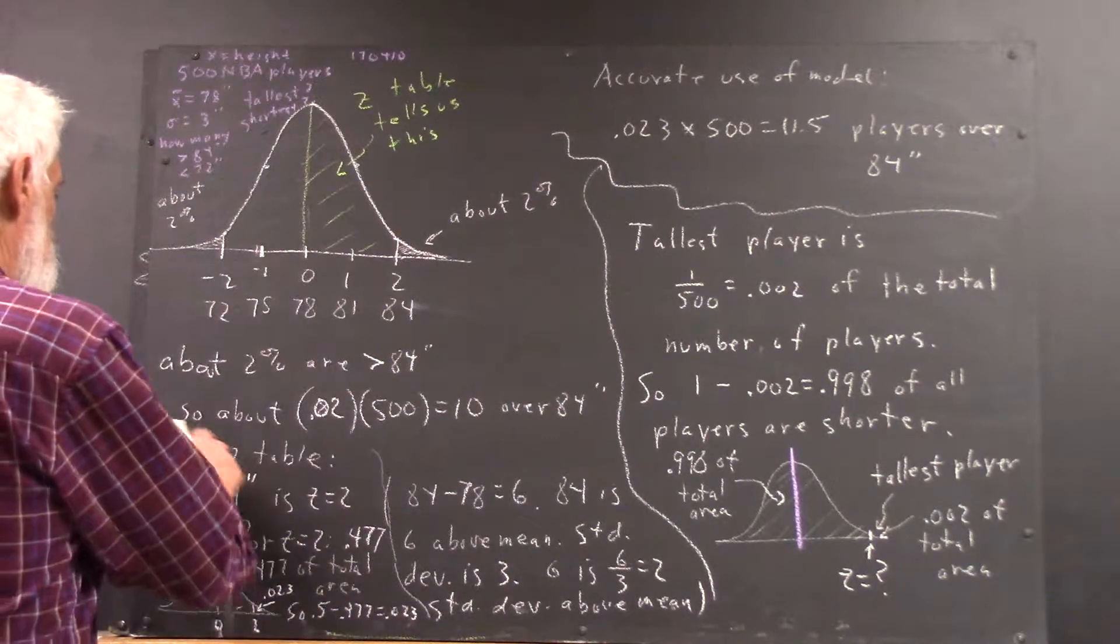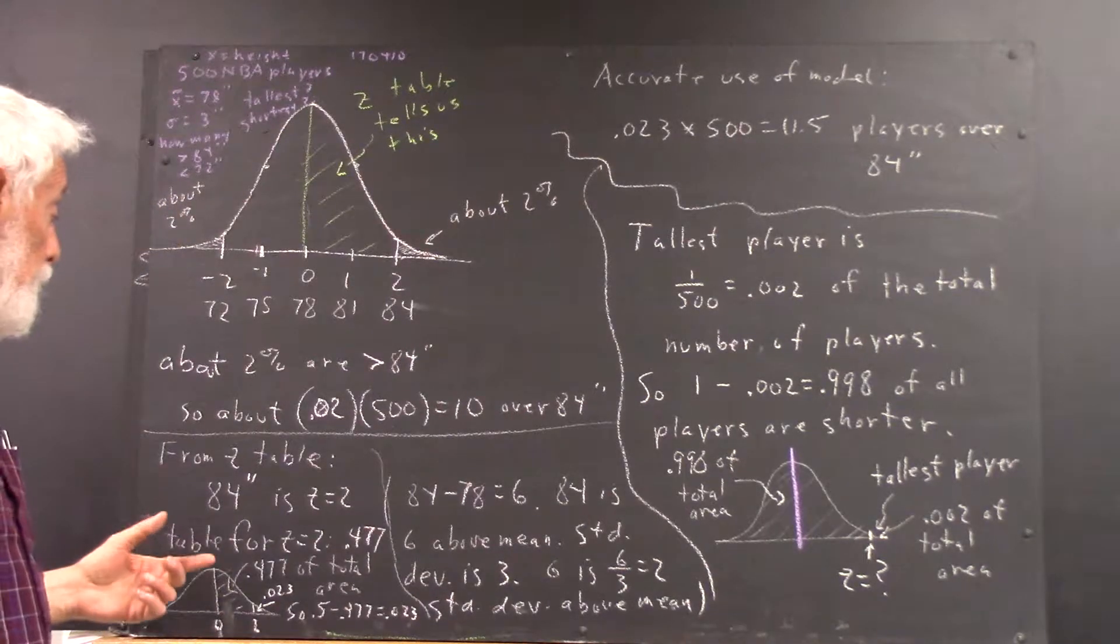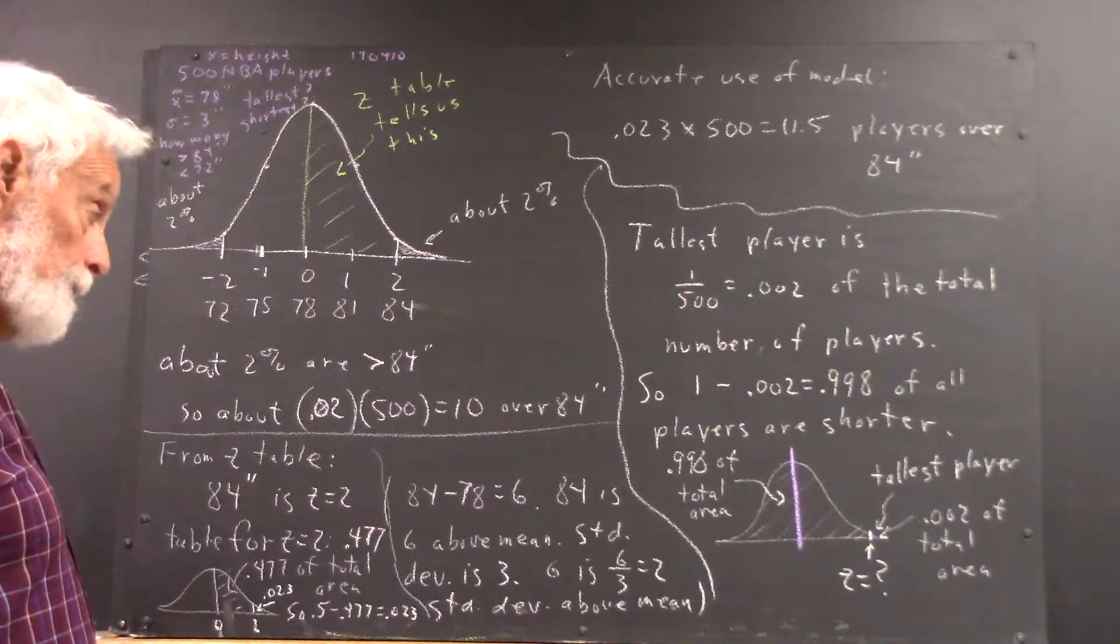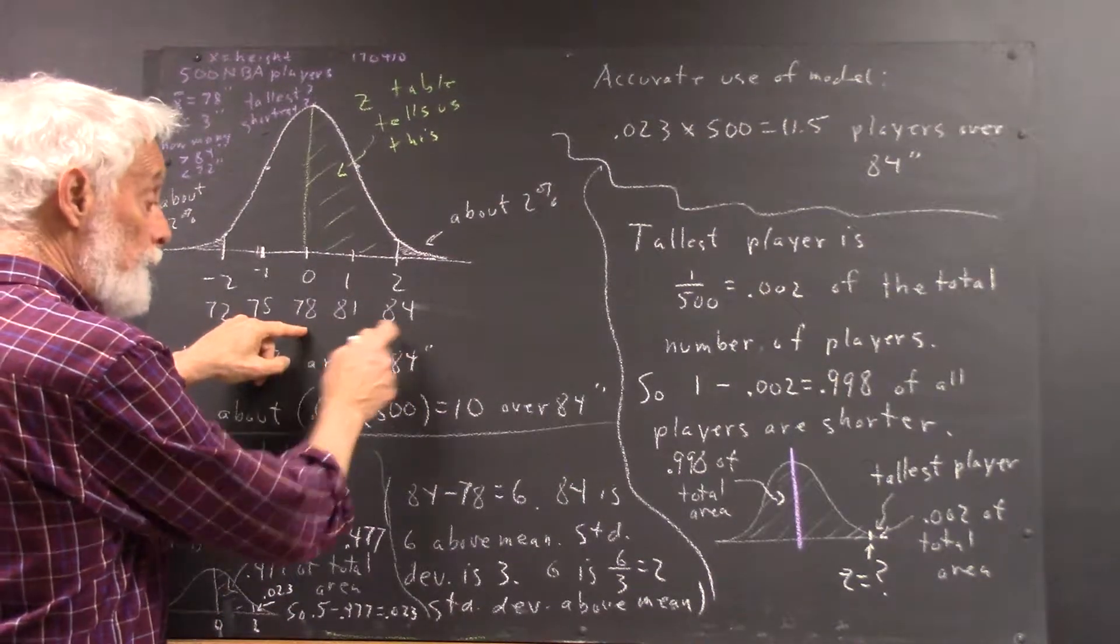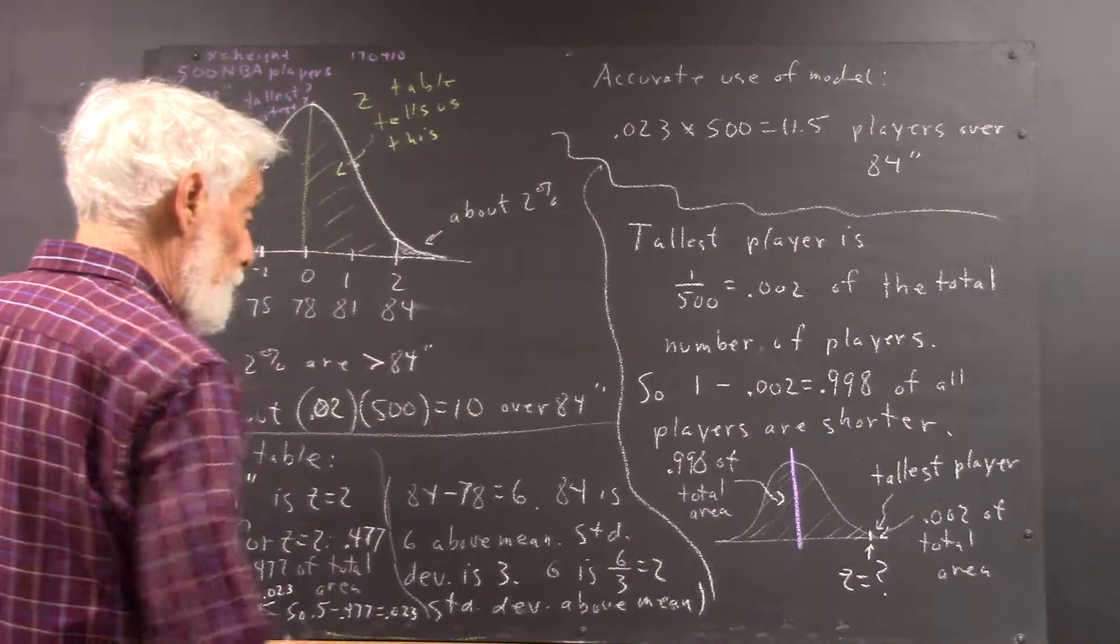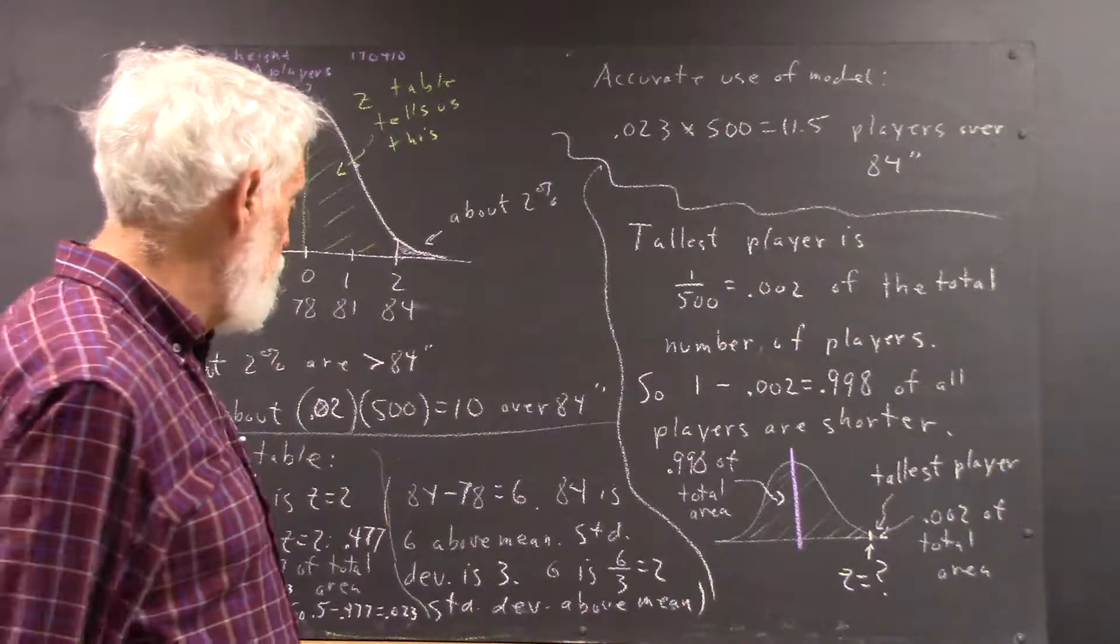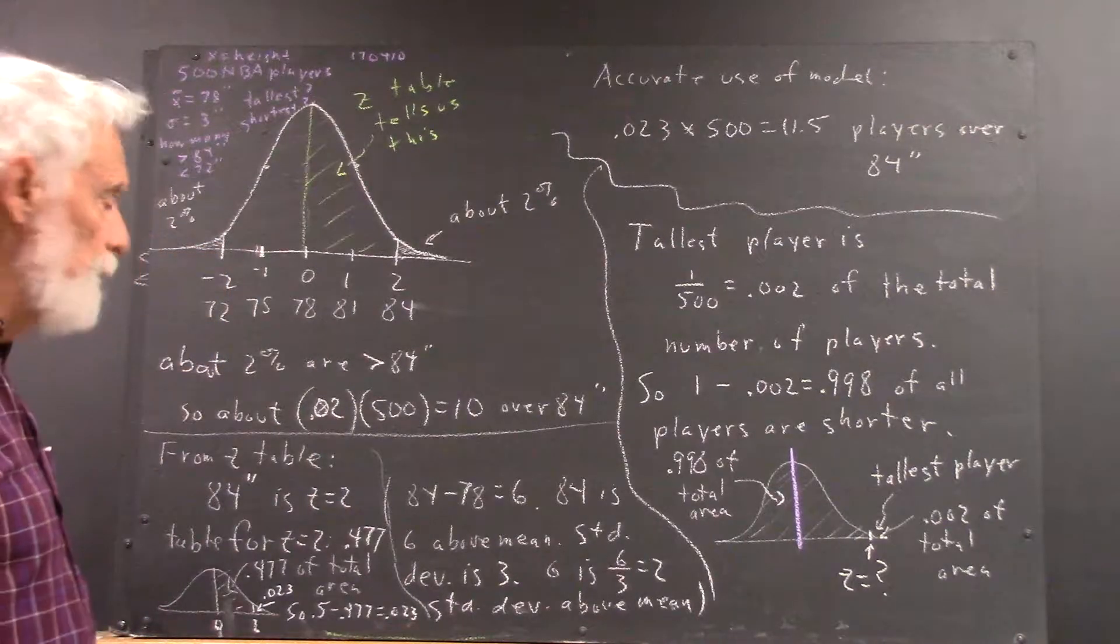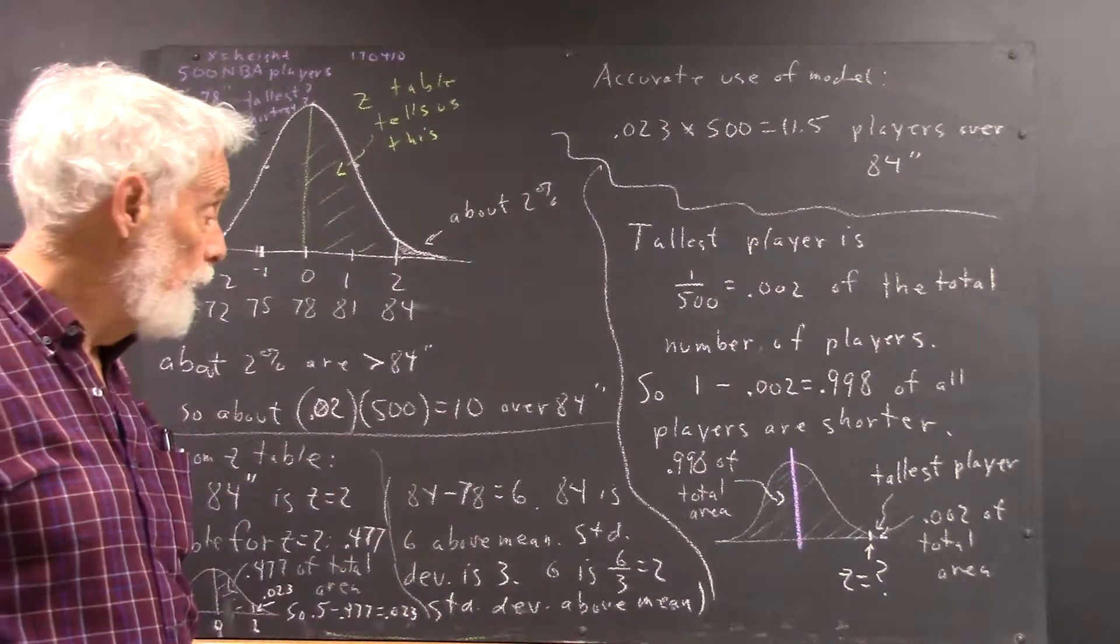If we want to get a little more rigorous about it, and we need to be able to do that when the problem calls for it, from the z table we see that 84 inches is z equals 2. We could calculate that: from the middle, which is 78 inches, out to 84 inches is a difference of 6 inches. So 84 minus 78 is 6, corresponding to 6 inches between here and here. So 84 is 6 greater than the mean, 6 above the mean. If you're 6 above the mean, how many standard deviations are you above the mean? The standard deviation is 3 inches, so 6 inches is clearly 2 standard deviations.